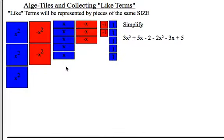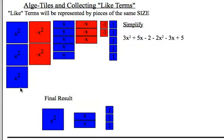And again, if we observe the zero principle and how the pairs cancel each other off, I am left with 1x squared, 2 x's, and 3 positive 1's. From the algebraic expression side, it looks like this. The 3x squared minus 2x squared leaves me with the 1x squared. 5x minus 3x leaves me with 2x. And negative 2 plus 5 leaves me with positive 3.